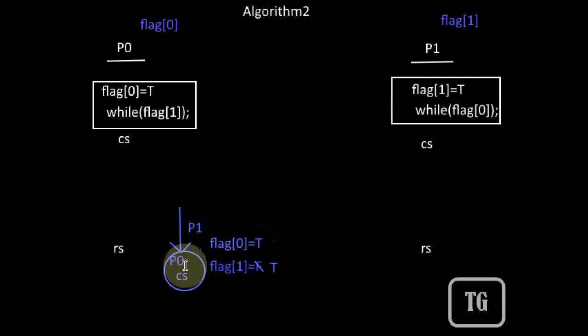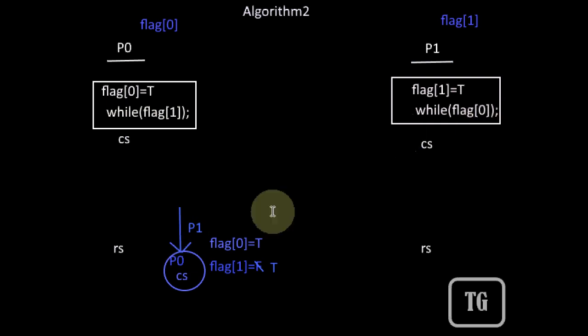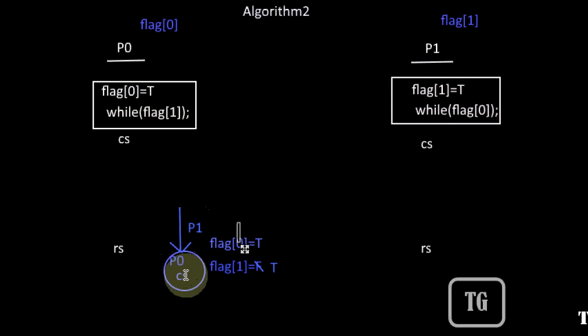While one process is inside the critical section, its flag will be true. Hence, the other process — even if it wishes to enter the critical section — will never enter; it will keep on waiting in the while loop. Thus, mutual exclusion is satisfied by this algorithm. There is no chance that both processes are inside the critical section at the same time.